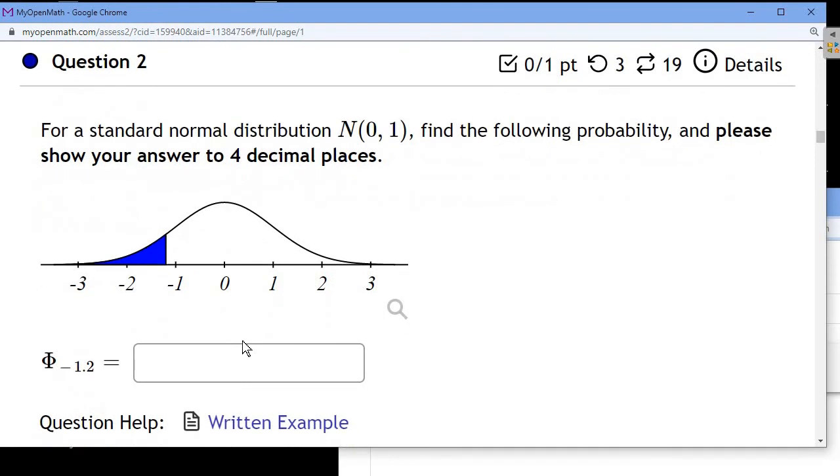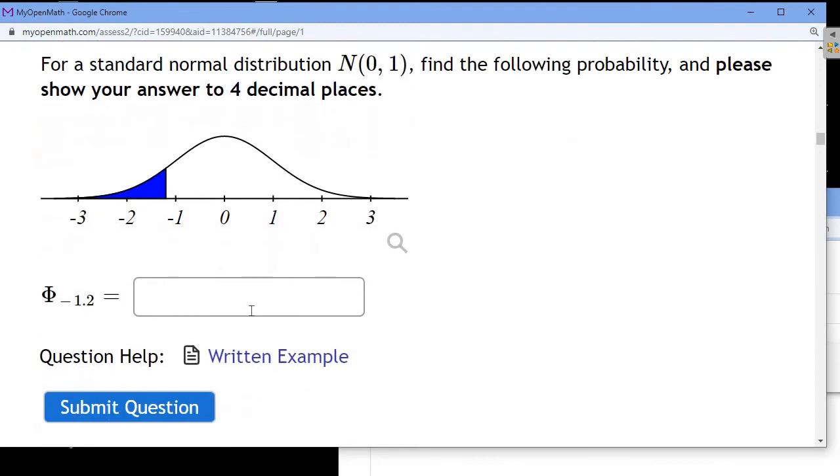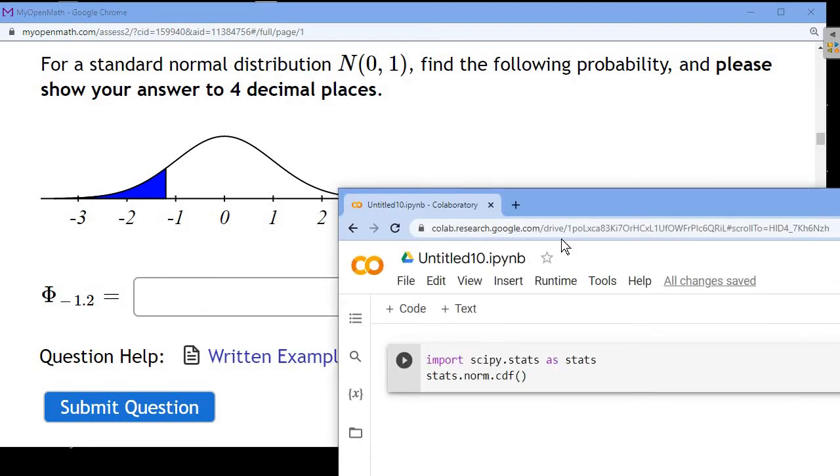So now, instead of giving me the symbol for the area and asking me to draw or sketch the blue area, now they're actually asking what is that blue area to the left of negative 1.2. In order to do that, we're going to use Python. So instead of using tables, we're just going to use Python.